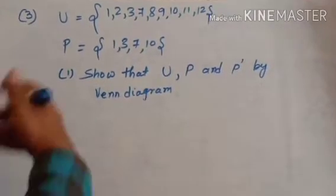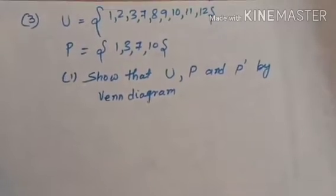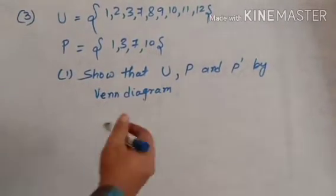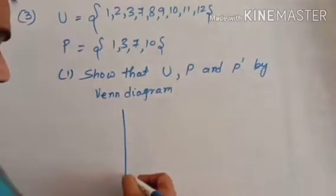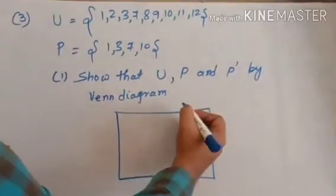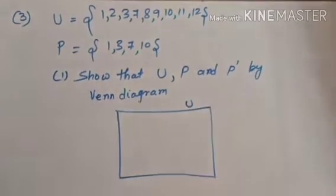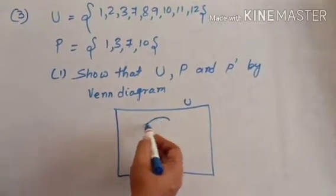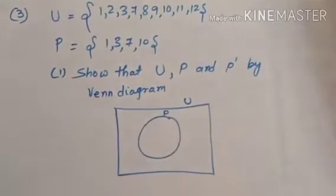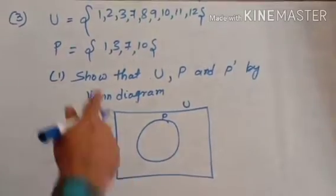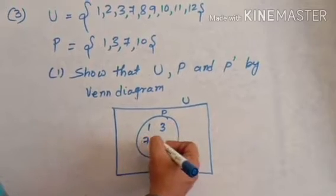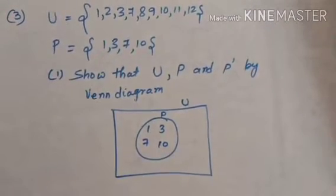Now we solve the first part of the question: show U, P, and P complement by Venn diagram. First of all we draw the universal set. For the universal set we take a rectangle as a Venn diagram. This is U, and under this we make one circle as P. Under P, the elements are 1, 3, 7, 10.